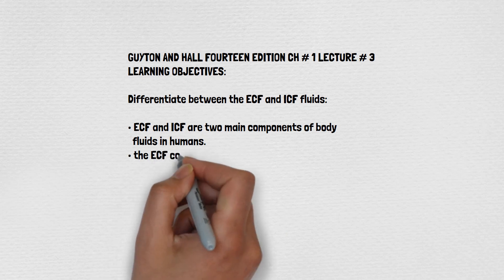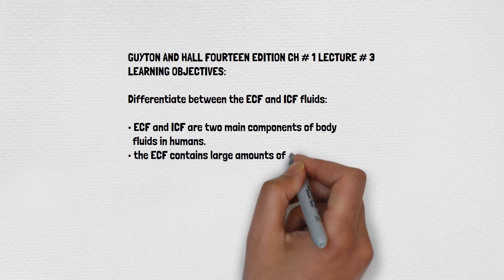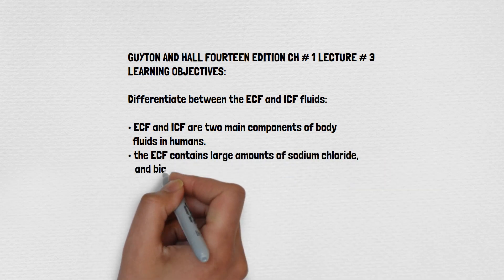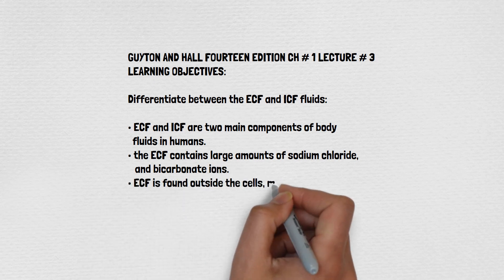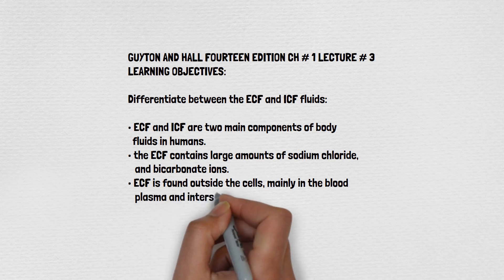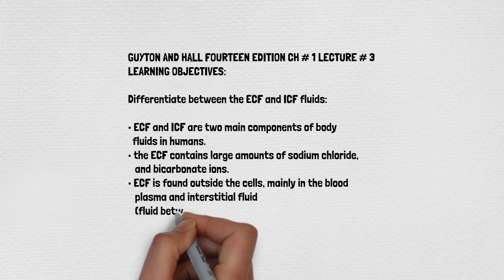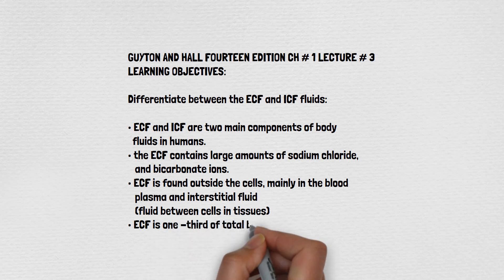The ECF contains large amounts of sodium chloride and bicarbonate ions. ECF is found outside the cells, mainly in the blood plasma and interstitial fluid between cells and tissues. ECF is one third of total body fluid volume.